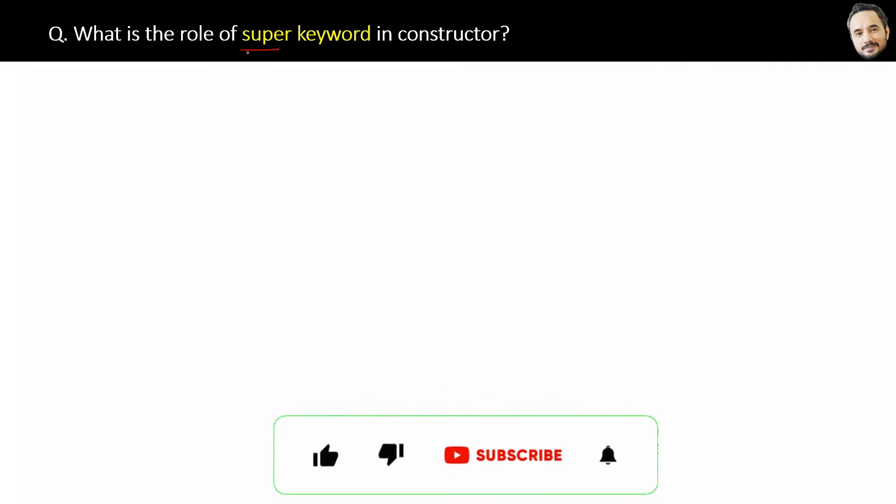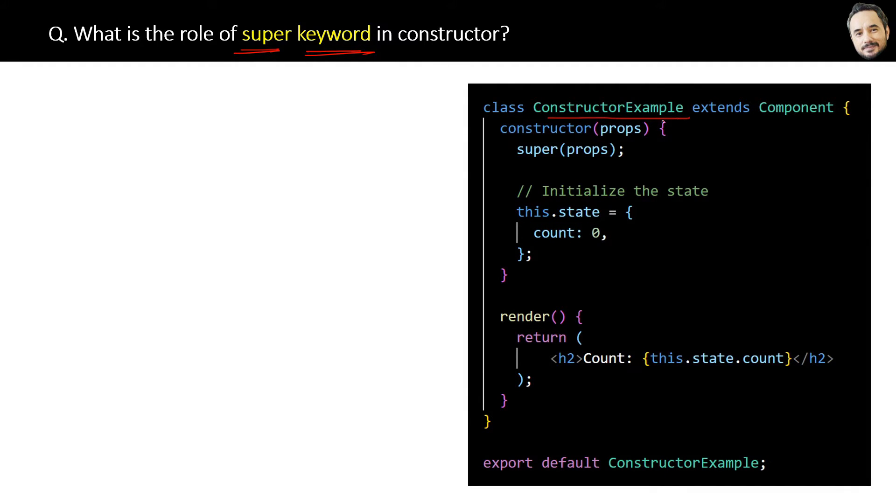What is the role of the super keyword in the constructor? This is the same previous example of the constructor in the class component where we were using the constructor to initialize the state, and later rendering and displaying